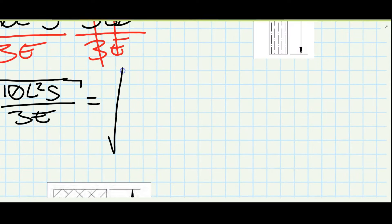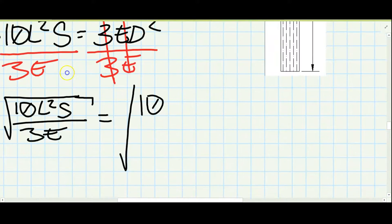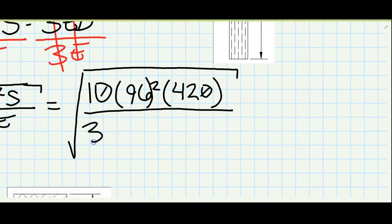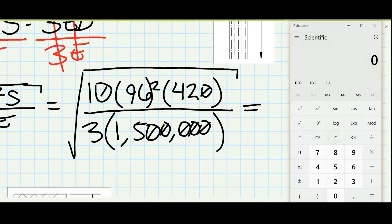So S is 420, L is 96, and then times one million five hundred thousand. So let's do 96 squared times 10 times 420 divided by 3 divided by one million five hundred thousand.